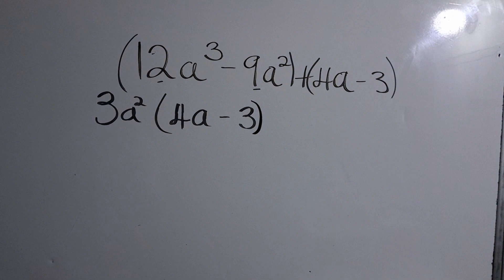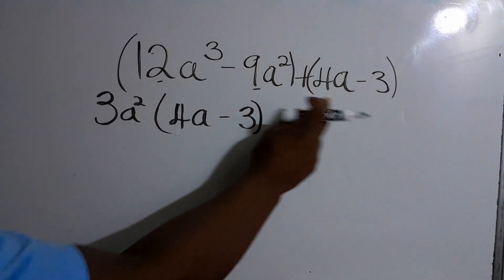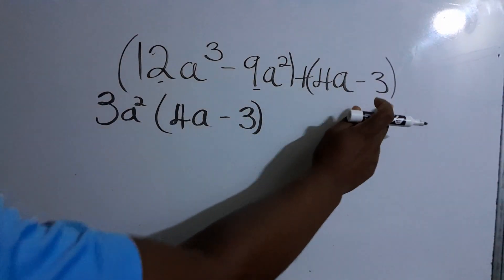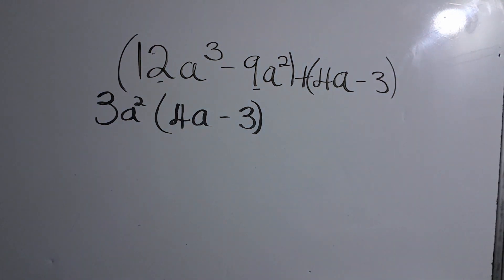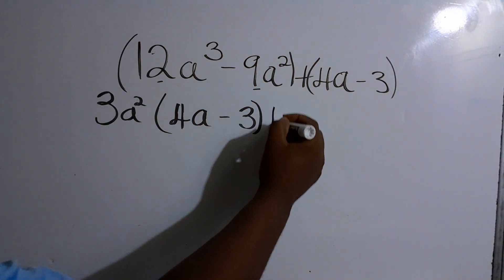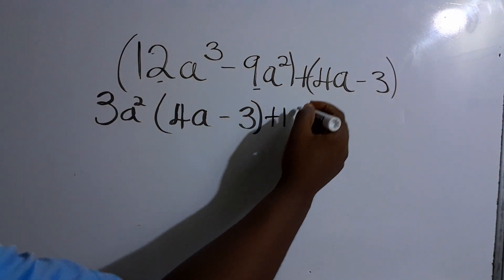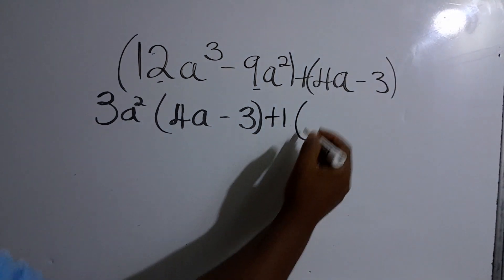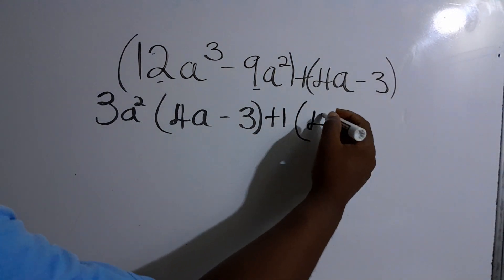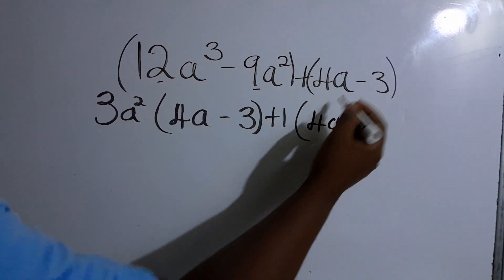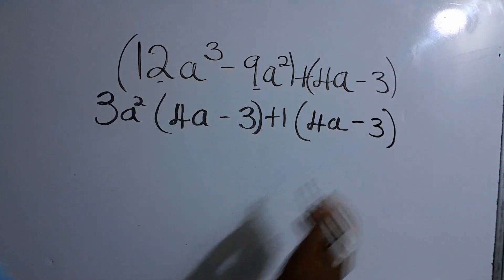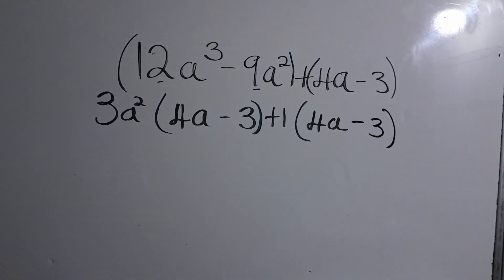Next, we look at the second group and find what is common. The highest number that can go into 4 and 3 without a remainder is 1. So 1 into 4a is 4a, and 1 into negative 3 is minus 3.